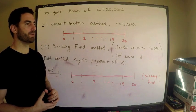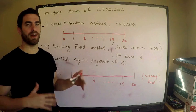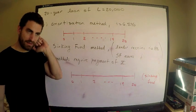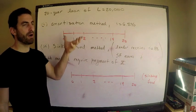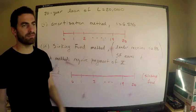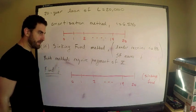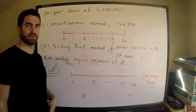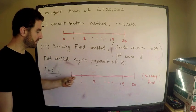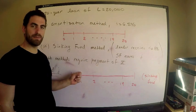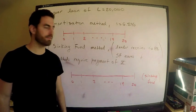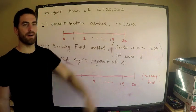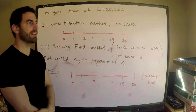The sinking fund method is probably new. Instead of making payments that are part interest and part principal annually as in the amortization method, what I'm going to do is make payments on the loan that are only interest. So in each year I'll keep owing $20,000. In fact on year 20 I'll still owe $20,000 — I've paid nothing off the balance and haven't changed that balance at all.